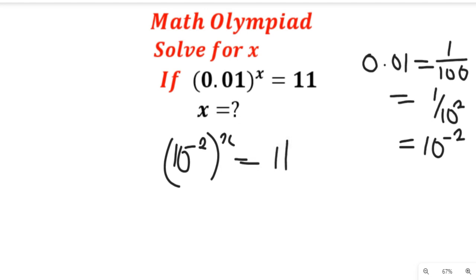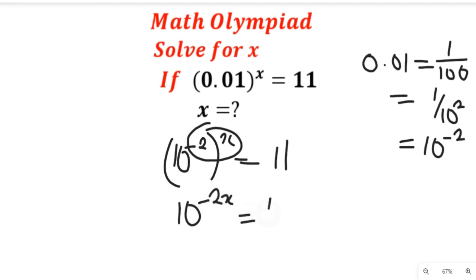Now the laws of logarithm indices allow us to multiply these two exponents, so that gives us 10 to the power of negative 2x equal to 11.